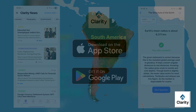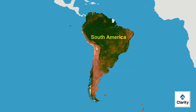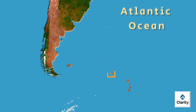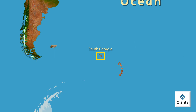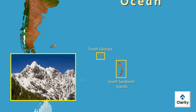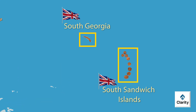Let us now look at a few islands near the South American mainland in the Atlantic Ocean. The first one is South Georgia and the South Sandwich Islands. They lie in the Southern Atlantic Ocean and are remote and rugged islands. These islands are part of British overseas territory.